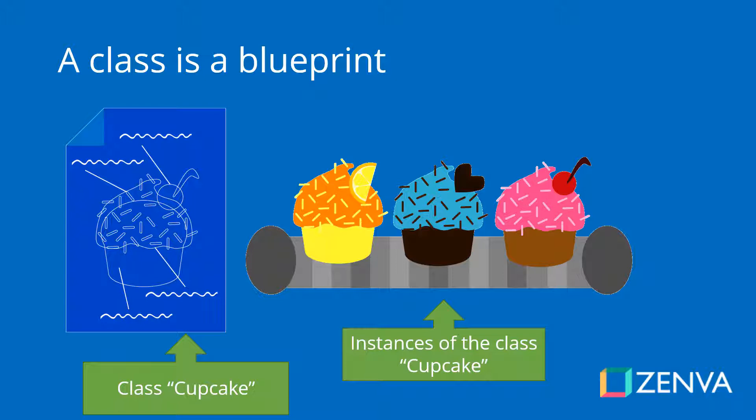The same analogy applies with a cooking recipe: having a recipe doesn't mean you have a cake — you actually have to make the cake. That is how you should see classes, and that is the easiest way to understand the concept.